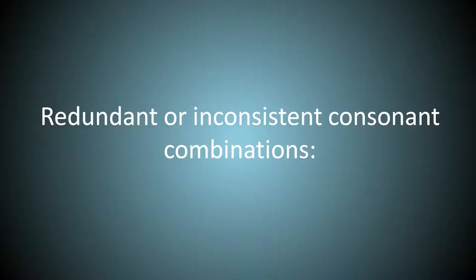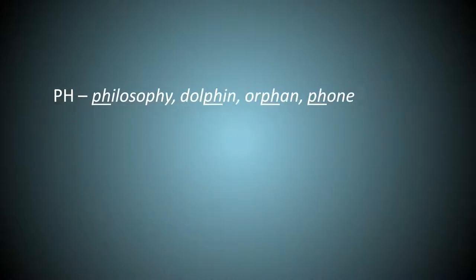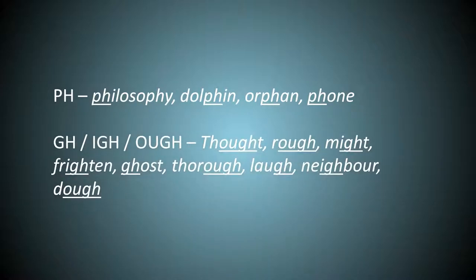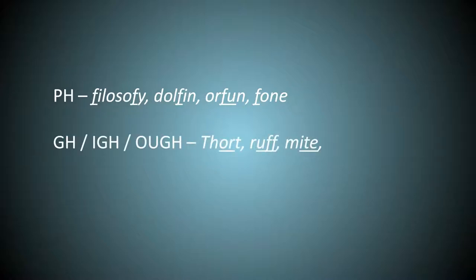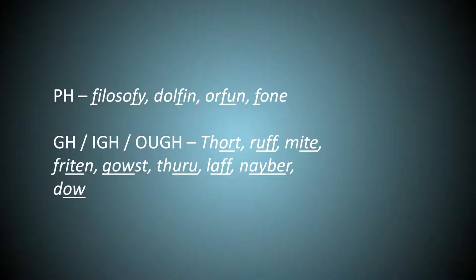Redundant or inconsistent consonant combinations. Here we only have PH and GH, IGH, OUGH, anything with GH really. PH is just another way to say F, so it doesn't need to exist and only creates confusion around which to use. And GH represents way too many sounds to list. PH is replaced with F. And most of these explain themselves. GHOST needs a W, otherwise it's GOST. For THOROUGH, I can't think of any other way to write it, so THOROUGH.